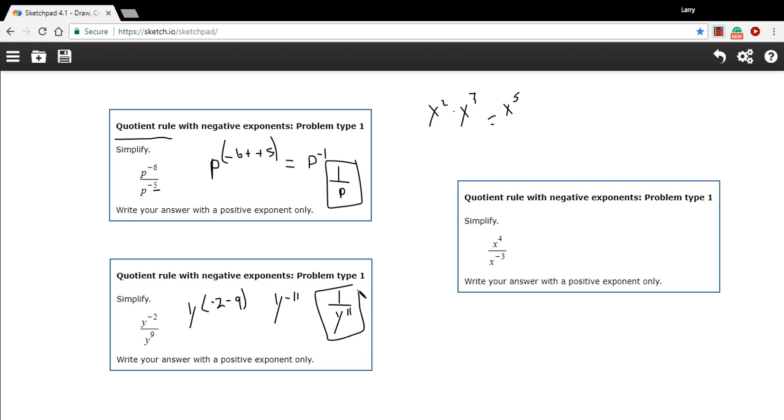All right, one more. Here we have x to the fourth over x to the third, or sorry, x to the minus third, so the answer here is going to be x to the 4 minus a negative 3, and 4 minus a negative 3 is the same as 4 plus 3, so this just equals x to the seventh, and that's it. We're done because this is a positive exponent, so x to the seventh is our answer.